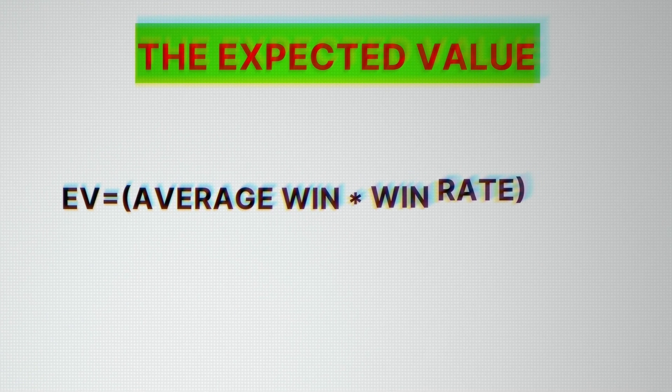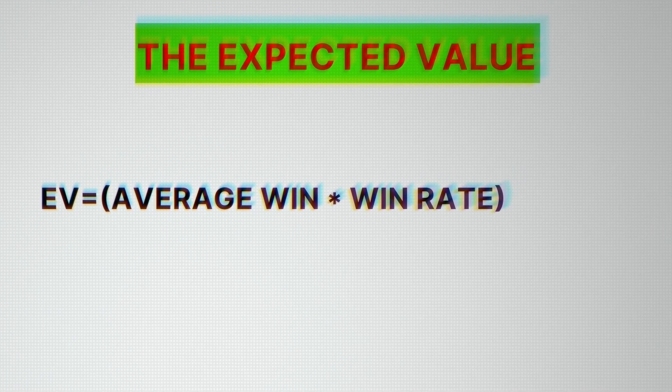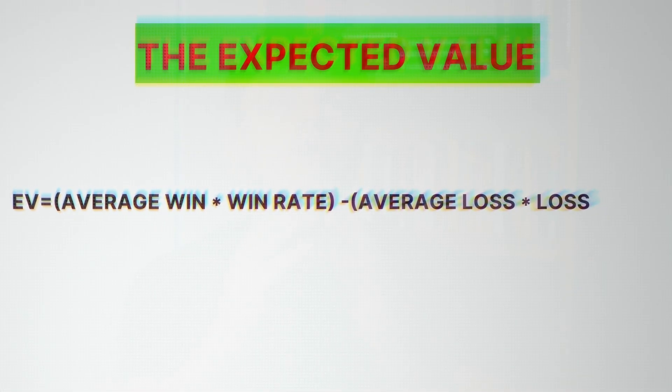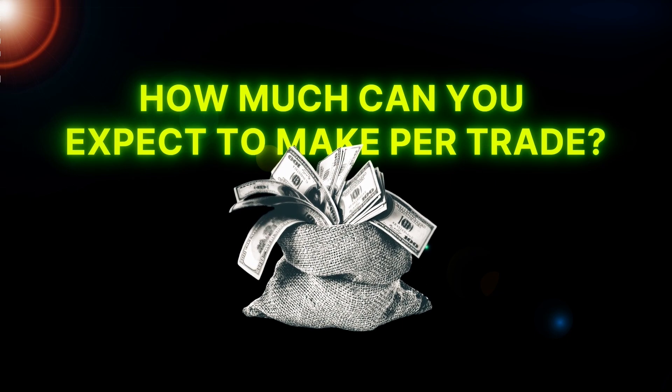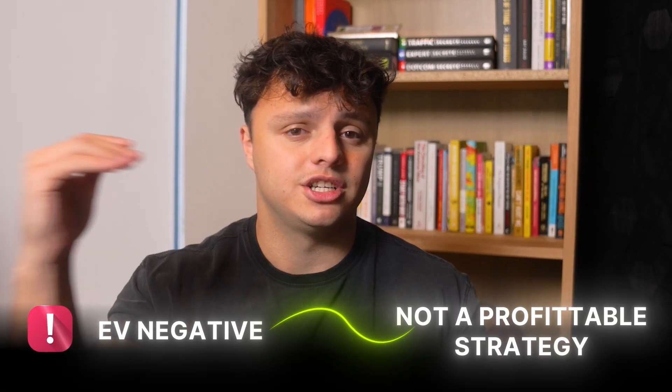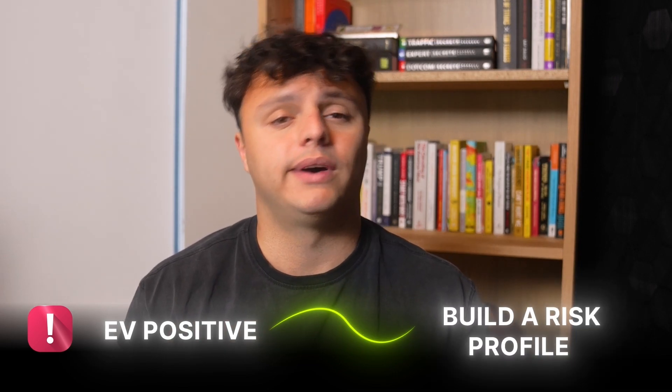Expected value is your average win times your win rate. So if you're winning at 60%, that's times 0.6. Then you subtract: your losing rate times your average loss — so if you win 60%, you lose 40%, times 0.4 times your average loss. Measure this in terms of R. This tells you how much you can expect to make per trade over a sample of 30 trades. If your expected value is negative right off the bat, that's not a profitable strategy and you need to change your approach.